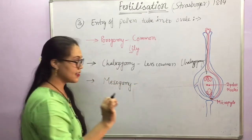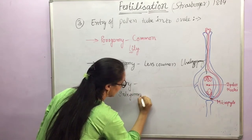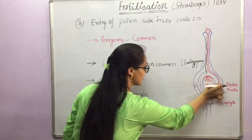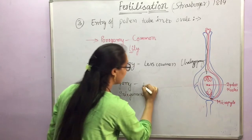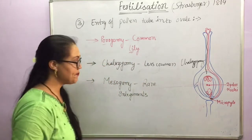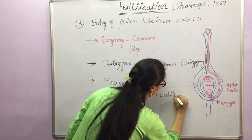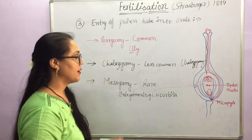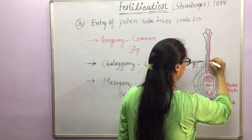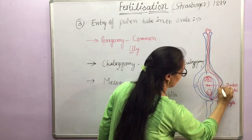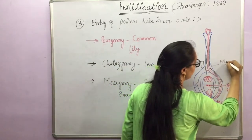Mesogamy is when the pollen tube enters through the integuments from the lateral side. It is the rarest of the three methods. An example in which this occurs is Cucurbita. So this was the mode of pollen tube entry into the ovule.